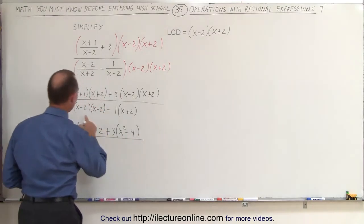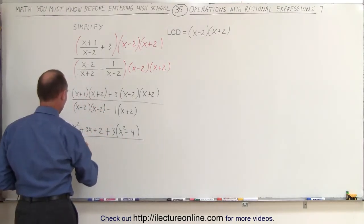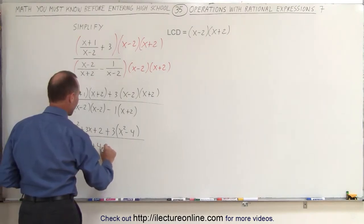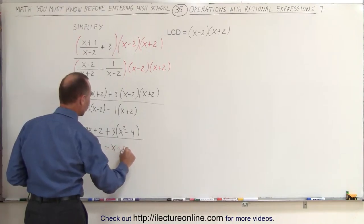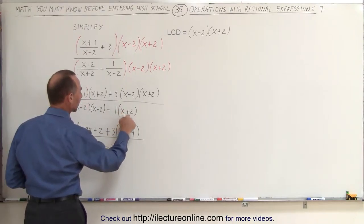We divide that by, over here when I multiply this together, we get x squared minus 4x plus 4 minus this times this, which is minus an x minus 2. The negative applies to both the x and the minus 2.